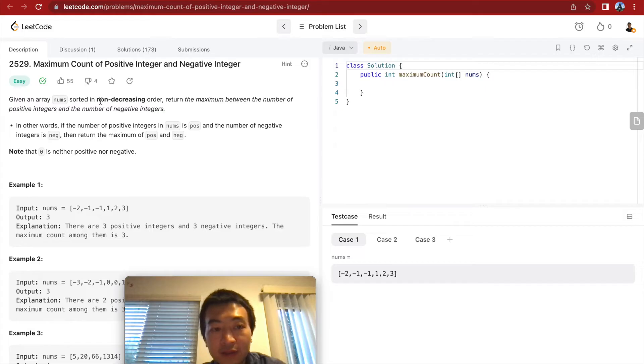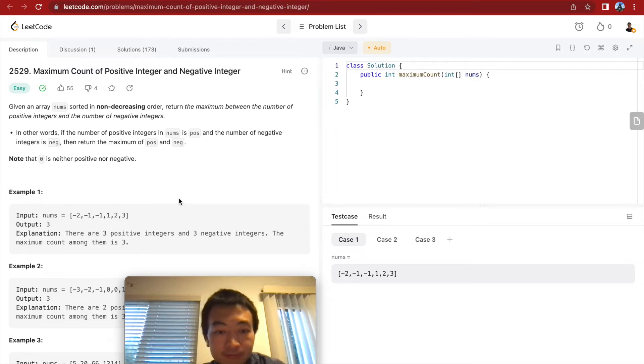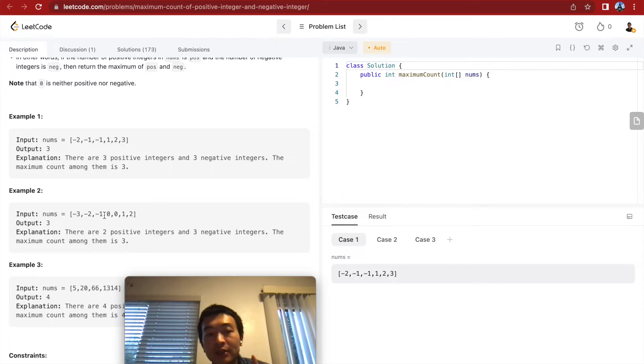Looking back, if this is a non-decreasing order, we basically can use binary search to see where the pivot point, or where the changing point, which is, because this is non-decreasing, right, we only need to find where the zero, if there is a zero. In this case, there is zero in this array.